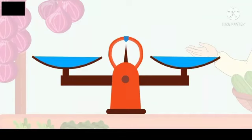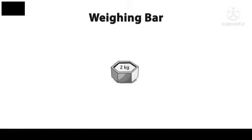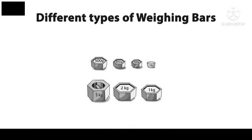So, on one pan we keep the weighing bars and on the other hand we keep the object. We use weighing bars to check the weight of an object. Now we look at here. Here you can see different types of weighing bars.